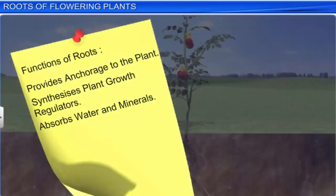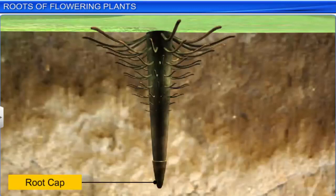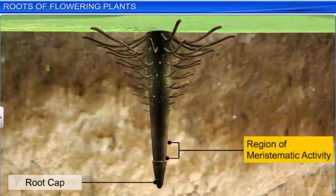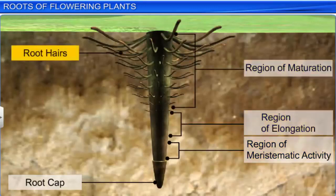The root system provides proper anchorage to the plant. It helps in the synthesis of plant growth regulators and is responsible for the absorption of water and minerals from the soil to different parts of the plant. From the tip upwards, a root has a root cap, a region of meristematic activity, a region of elongation, and a region of maturation along with root hairs.